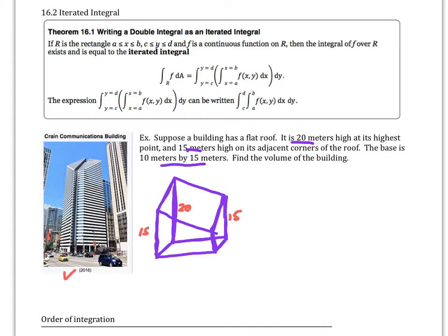This is kind of a slanted roof situation. The dimension of 15 runs in one direction and 10 in the other. To write the equation of the top plane — this roof — we consider that the back corner is on the z-axis. So this point is the origin (0, 0), and the height there would be 20.